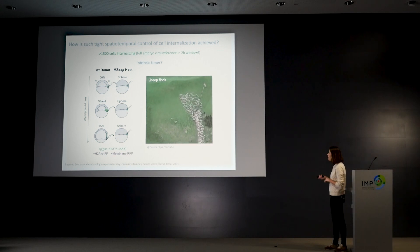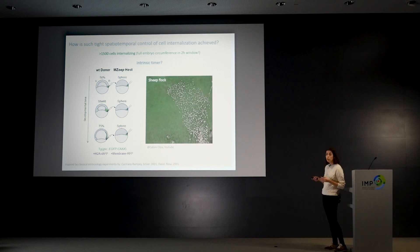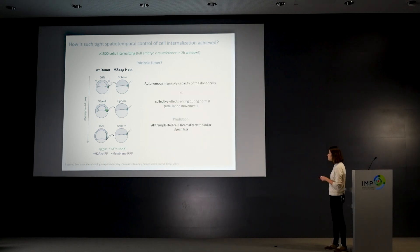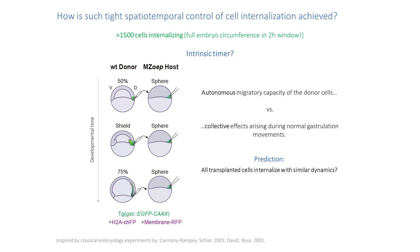Going back to the timer model — if it were correct, all transplanted cells should internalize with similar dynamics, because regardless of developmental stage we always collected cells at the time and position where they're about to undergo internalization, essentially synchronizing the cells. So what did we actually find?